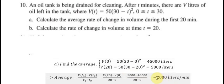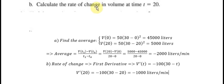we calculate minus 2,000 liters per minute. To find the rate of change in volume at t equals 20, we use first derivative.